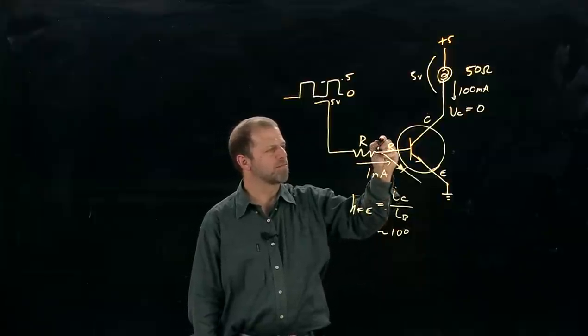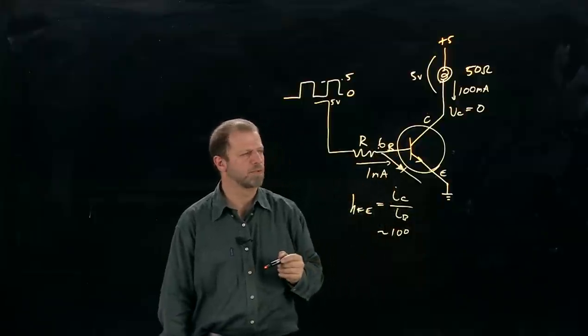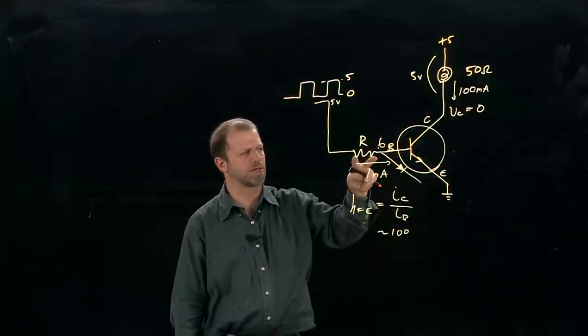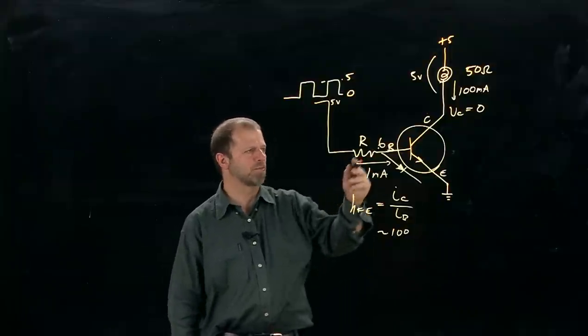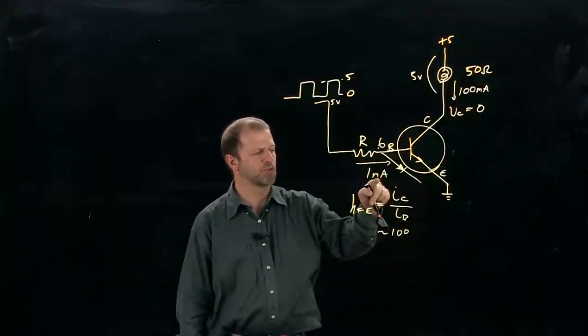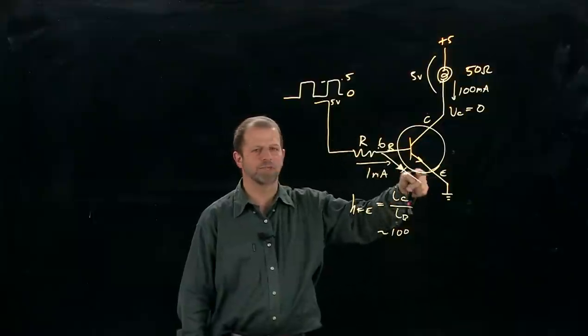You've got 0.6 volts here. So the voltage across this base resistor R is not the full five volts, it's only 4.4, and we have to assure that at least a milliamp flows.